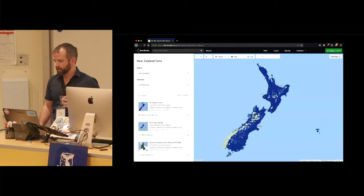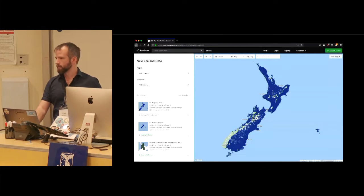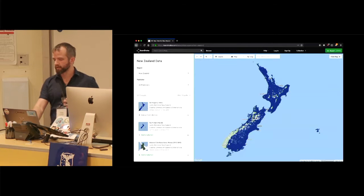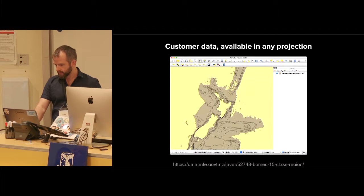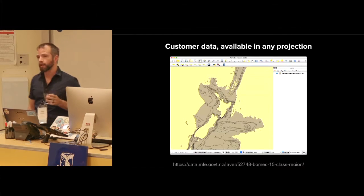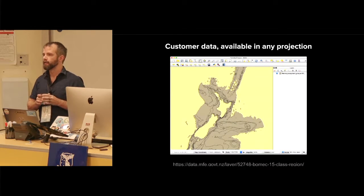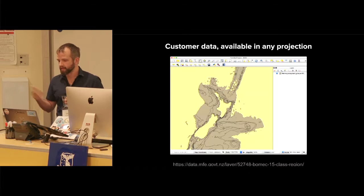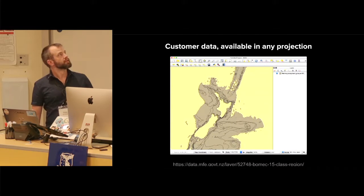Since we don't control the data the customer does, that can get interesting because people provide all sorts of different things. Sometimes it makes sense, other times it doesn't. We make it available in different projections. Customers will provide their data in a projection that makes sense to them, but it can be downloaded by others in lots of other projections and formats.